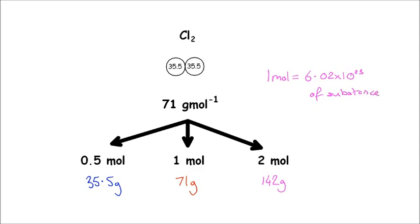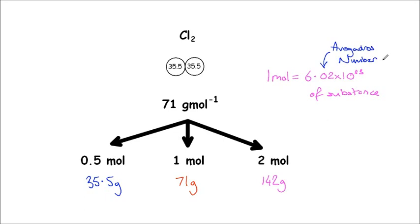So that's the basics of the mole. You just need to remember that the mole is a number, and one mole is equal to 6.02×10²³ of a substance. That number is called Avogadro's number.